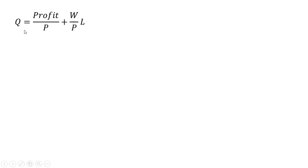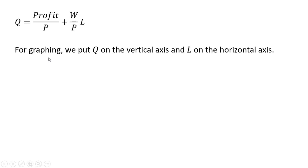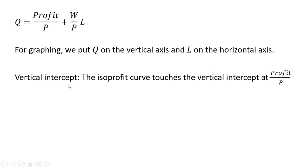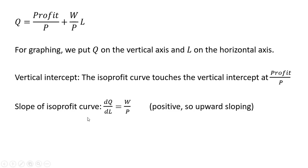So once again, our isoprofit curve. As for graphing, we're going to put Q on the vertical axis and L on the horizontal axis. The vertical intercept is just going to be the profit divided by the price — that's where the isoprofit curve intersects the vertical axis. The slope is W divided by P, and it is positive. Taking the derivative of the isoprofit curve with respect to L, we get the slope, so isoprofit curves slope upwards.